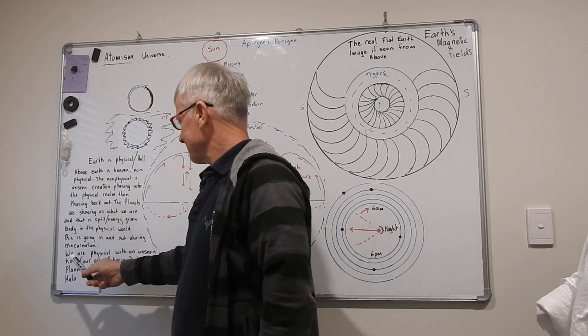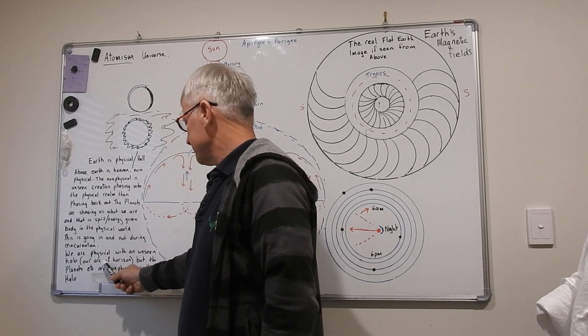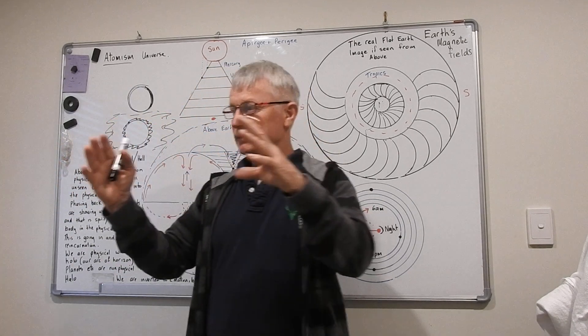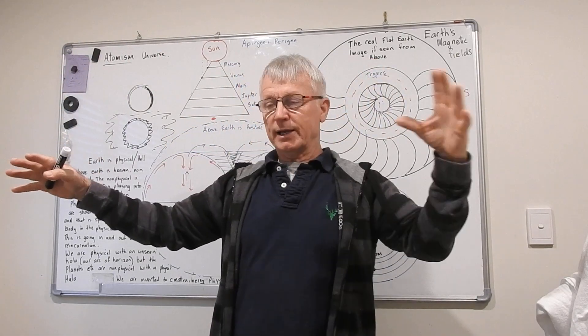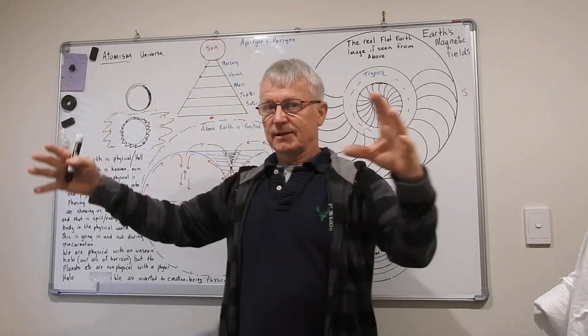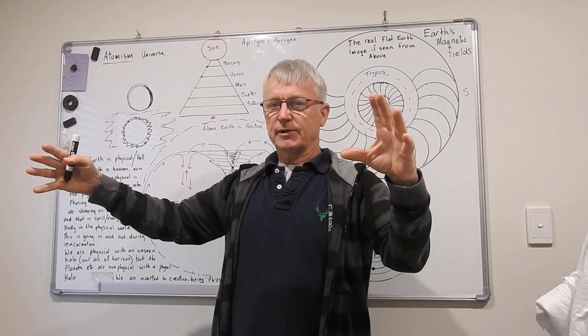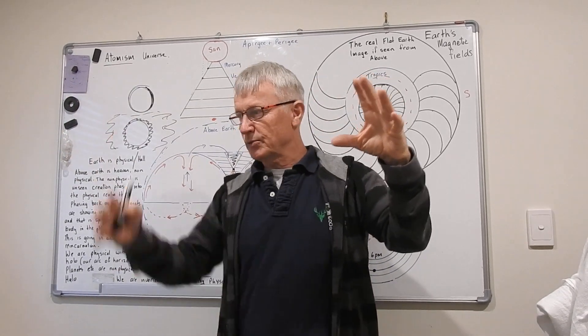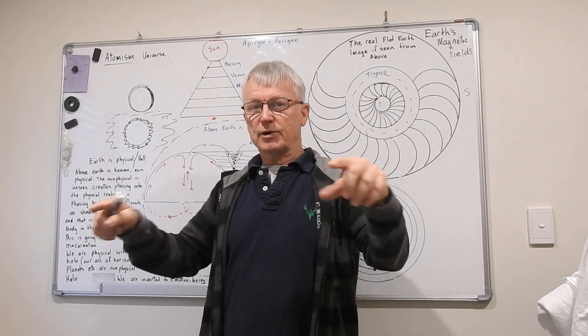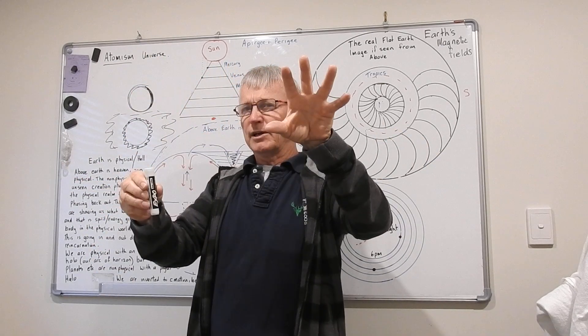Same thing. We are physical with an unseen halo - our arc of horizon. As we move, our arc moves and everything falls down. As we move away, move down in that arc, we come back, it moves up in our arc. This is how it works. Globers like to tell you you live on a globe, that's why it's going around, that's why it disappears around the other side of the globe. But no, it's your arc of horizon on a flat earth. Your halo. You move, it goes like this.